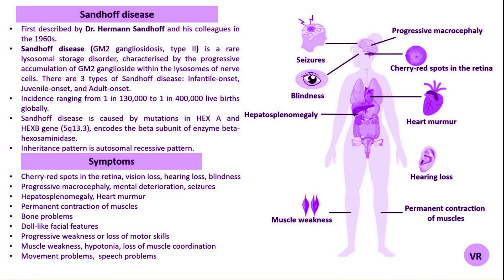Sandhoff disease was first described by Dr. Hermann Sandhoff and his colleagues in the 1960s. Dr. Sandhoff, a German biochemist, identified the disease as a rare genetic disorder related to the deficiency of hexosaminidase enzyme, which leads to the accumulation of GM2 gangliosides in neurons. This discovery was crucial in understanding the biochemical and genetic basis of the disease.